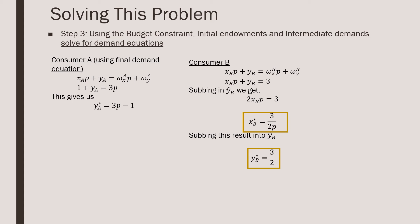For consumer B, what we're going to get is that we're going to first sub in our endowments and our intermediate demands. And with a little bit of algebra, we solve for x_B is equal to 3 over 2P. That's the Marshallian demand there. We take that result and then we sub it into our intermediate demand for y_B, and we find that y_B is just equal to 3 over 2.